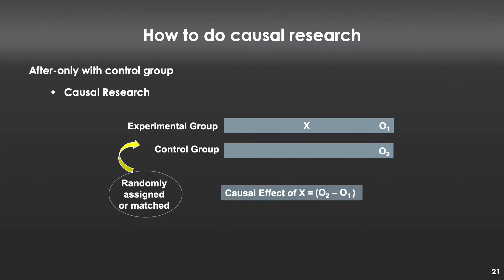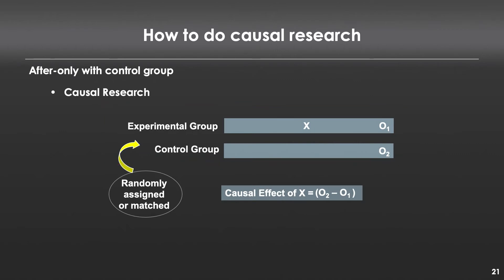And now we finally get to experimentation. Experimentation requires a few components. First, we need multiple groups. The simplest version would be an experimental group and a control group — a group where nothing happens. You could also have multiple experimental groups or no control group and just two experimental groups. But as long as you have two or more groups to compare, you've got the beginnings of an experiment. The most important and critical piece is that you have to randomly assign participants to be included in either of these groups. Random assignment makes it so that anything that could possibly be different across two groups — individuals, car dealerships, whatever your unit of measurement — is equally represented across the groups.